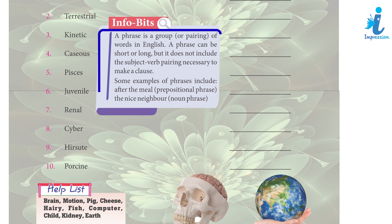A phrase is a group or pairing of words in English. A phrase can be short or long, but it does not include the subject or verb appearing necessary to make a clause. Some examples of phrases include: 'after the meal' — a prepositional phrase.